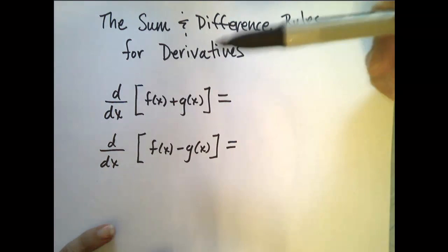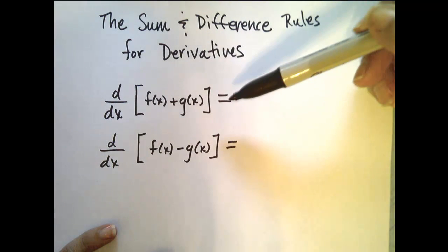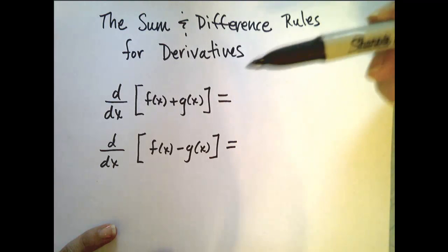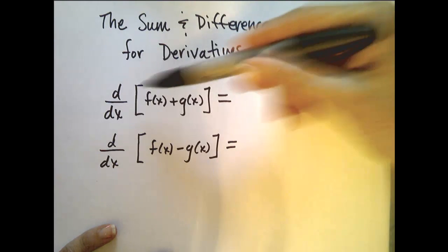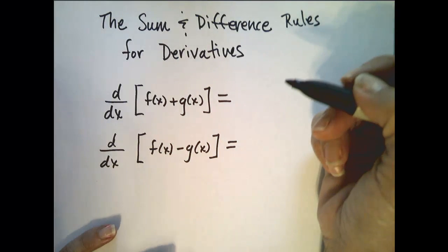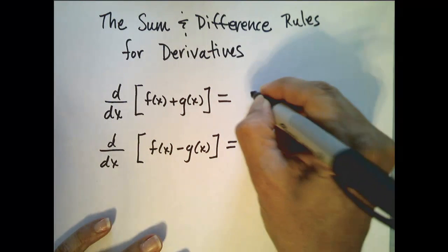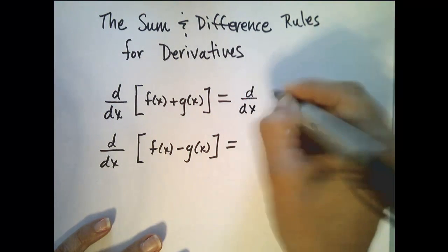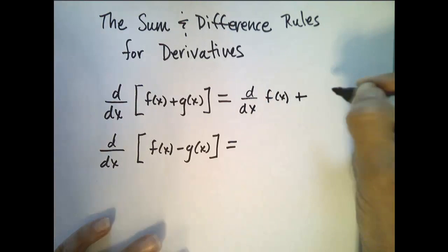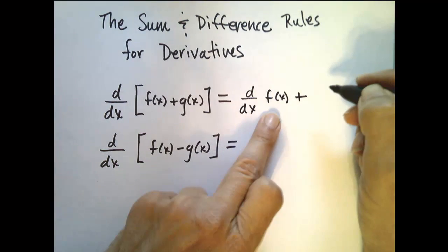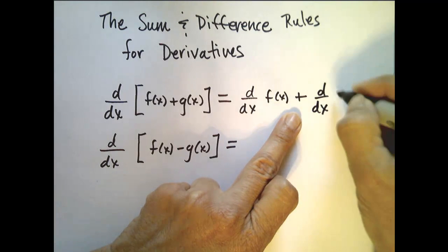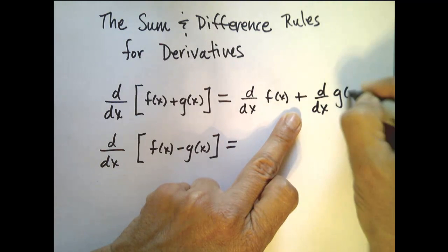If we know that f and g are differentiable functions, then what is true is that the derivative of the sum of those functions is equal to the sum of the derivatives. So that would mean that the derivative of f plus g is equal to the derivative of f plus the derivative of g.